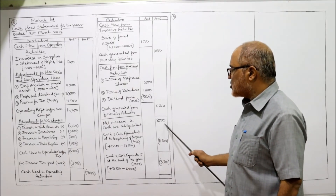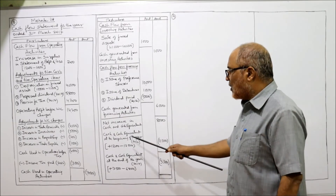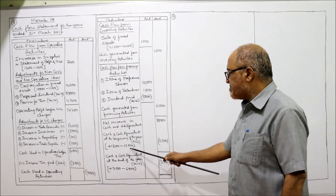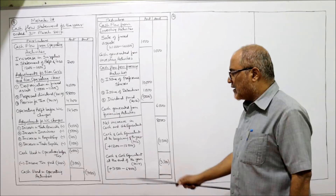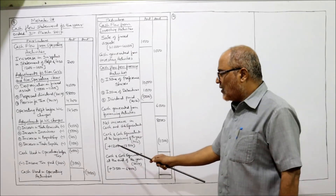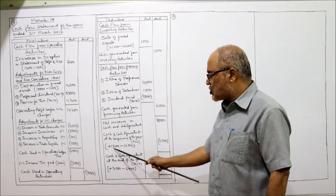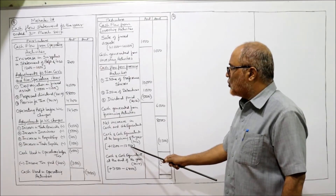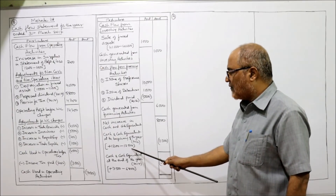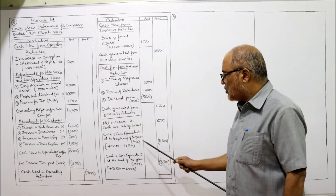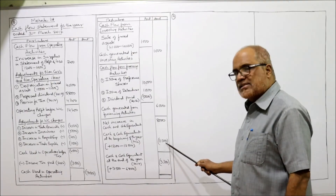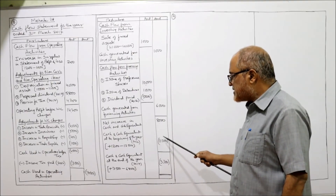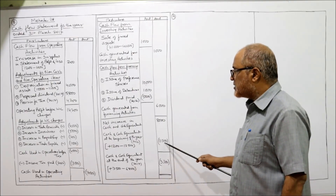Cash and cash equivalents at the beginning of the year: cash 1,200, bank overdraft 12,500 — so net is minus 11,300. Plus the net change of 8,000 gives minus 3,300, which we compare to end-of-year figures.